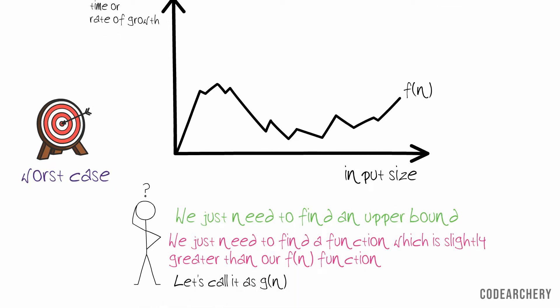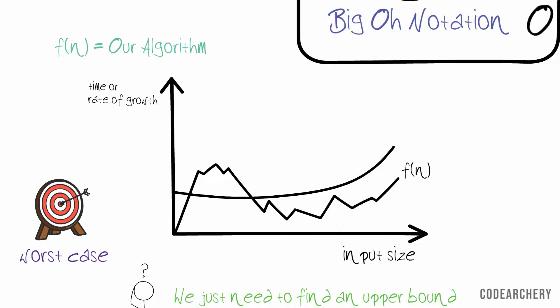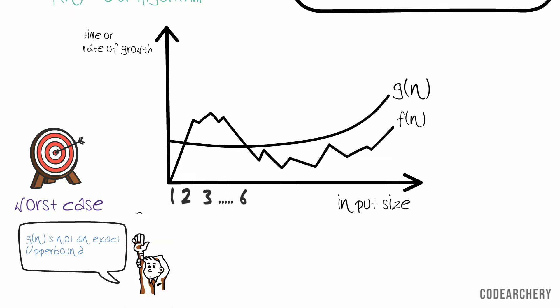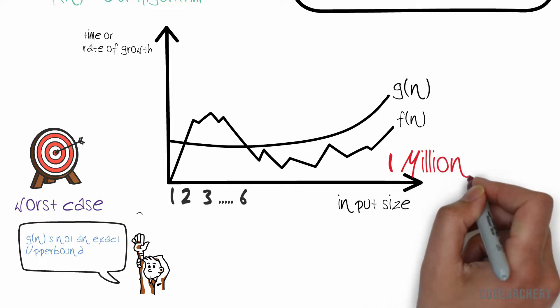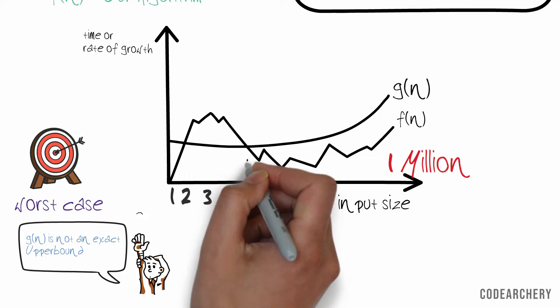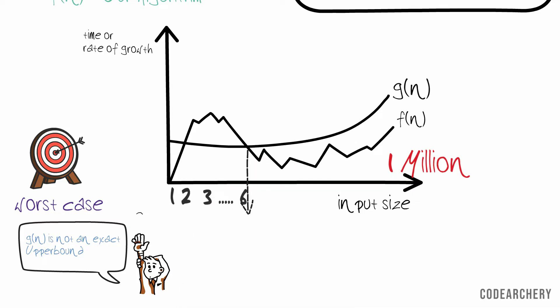Let's call it the g(n) function. You might say this is wrong. The function g(n) is not exactly an upper bound of f(n). Yes, you are correct, but we really don't care whether our algorithm sorts 6 items faster. We care about greater input size. We need to understand how our algorithm performs for 1 million items.